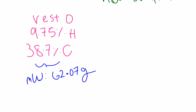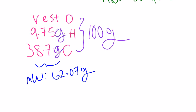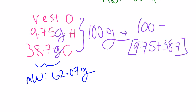To start off, we need to calculate the empirical formula. First, we will assume that we have 100 grams of the compound, thereby replacing the percentages with grams. However, we still don't know the mass of oxygen. So we subtract 38.7 and 9.75 from 100 to see how many grams of oxygen exist within the compound. We then get 51.55 grams of oxygen.